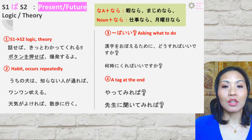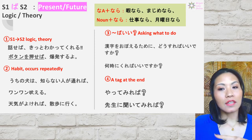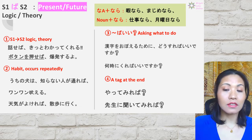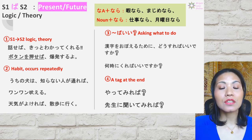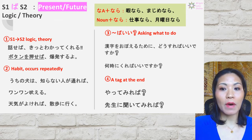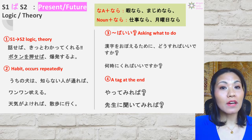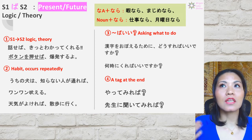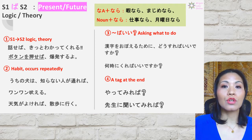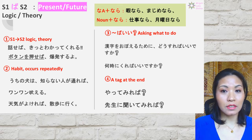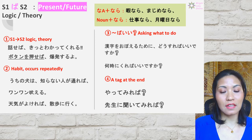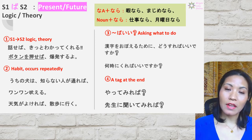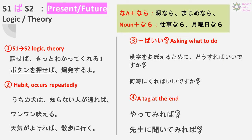Number three is the form 何々言えばいい — asking what to do or asking for advice. For example: 漢字を覚えるためにどうすればいいですか? and 何時にくればいいですか? It's asking for advice or opinion. When you answer, you also use ば to give advice: 九時にくればいいですよ、毎日漢字を読めばいいですよ. Number four is a tag at the end used as advice: やってみれば、先生に聞いてみれば — in English, 'why don't you try it' or 'why don't you ask the teacher.'